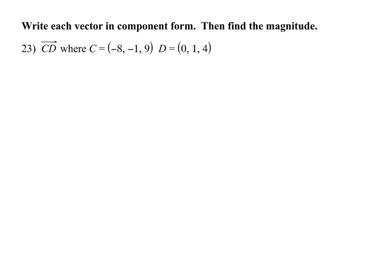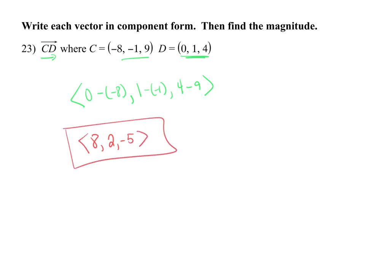Component form for three dimensions works the same as two dimensions — subtract your Xs, subtract your Ys, subtract your Zs in the correct order. Here, going from C to D: 0 minus negative 8, then 1 minus negative 1, then 4 minus 9, giving component form of 8, 2, negative 5. Magnitude is also the same — square root of 8 squared plus 2 squared plus 5 squared, which is approximately 9.6.